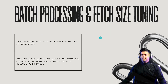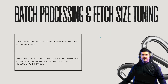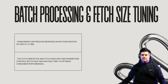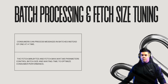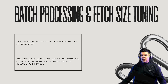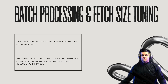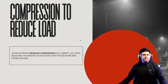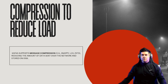Next is batch processing and fetch size tuning. Consumers can process messages in batches instead of one at a time. The parameters fetch.min.bytes and fetch.max.wait.ms control batch size and waiting time to optimize consumer performance. Kafka also supports compression — like Snappy, LZ4, and Zstd — to reduce the amount of data sent over the network and stored on disk.